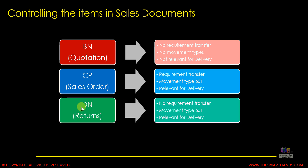For schedule line category DN (return), no requirement transfer is needed because we are receiving the return from the customer, not sending requirements to MRP. The movement type is different because goods are coming back to us rather than going out. It is relevant for delivery, but it will be an inbound delivery, whereas CP results in an outbound delivery. These are the different settings maintained in the customizing of the schedule line category, which we'll discuss in the next video.